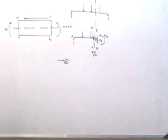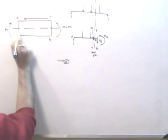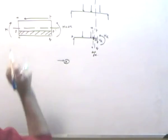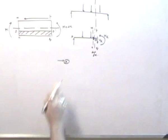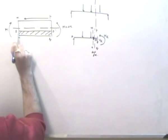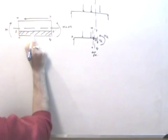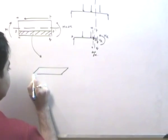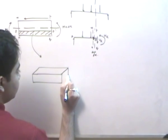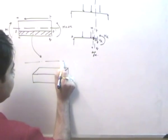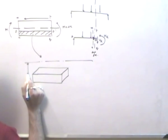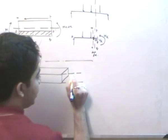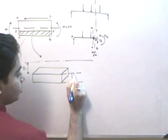Considering the neutral axis of the beam, I take the block O-O'-I'-I and find its equilibrium. Magnifying this block, this is the shaded portion above the neutral axis. The distance of the neutral axis from the block is Y₁. We now draw the normal stress distribution at this face, which will be all tensile.